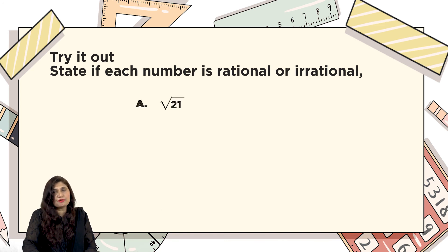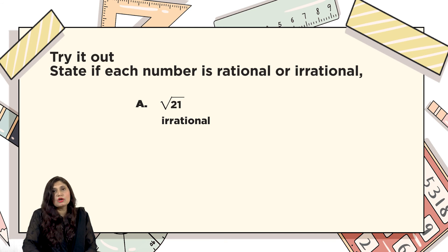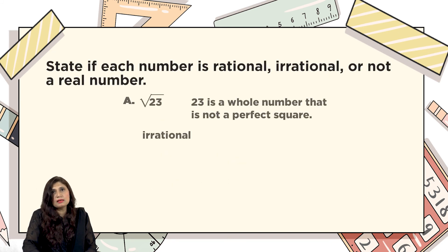Now try to solve these questions and identify which numbers are rational or irrational. Part A: the square root of 21 — it's an irrational number because 21 is not a perfect square and you will not get the answer in the form of a whole number or fraction. Part B: 0/3 — the denominator is a non-zero number, so it's a rational number. Part C: the square root of 23 — it's not a perfect square, so it's an irrational number.